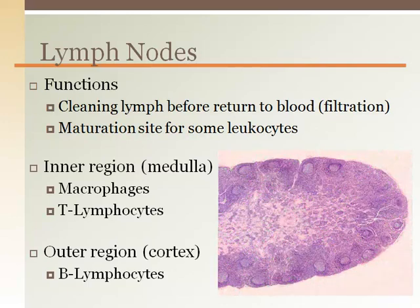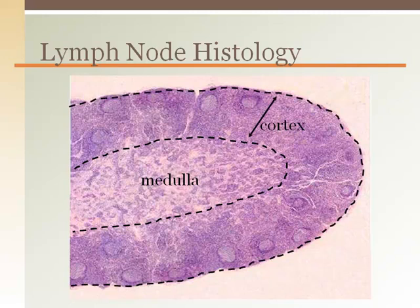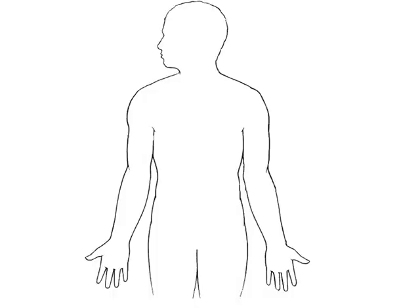Lymph nodes are small immune tissue clusters containing several different types of leukocytes. The inner region, where most of the lymphatic fluid flows through, contains macrophages or T lymphocytes. The outer, more dense region contains antibody-producing B lymphocytes. The important regions of the lymph node histology are the medulla or inner region and the cortex or outer region. The cortex contains circular regions called germinal centers where B lymphocyte plasma cells produce antibodies when an infection is present.